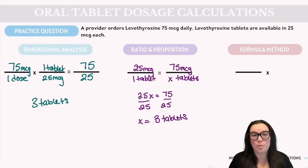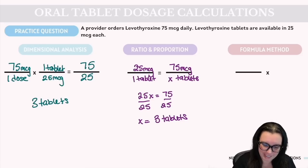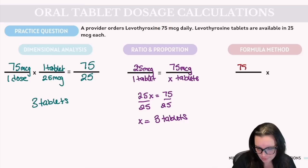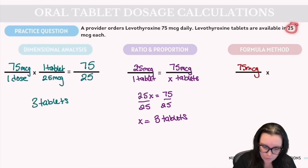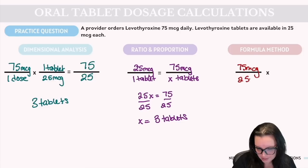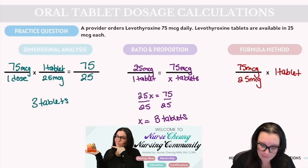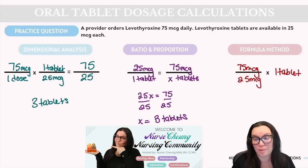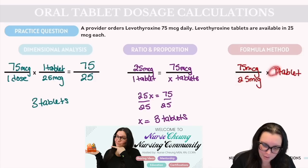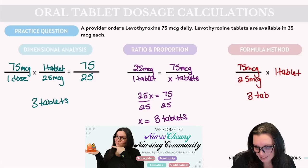For the formula method: desired over have, multiplied by quantity. We desire 75 micrograms, we have 25 micrograms available in one tablet. So 75 ÷ 25 = 3, multiplied by 1, gives us the correct answer of 3 tablets.